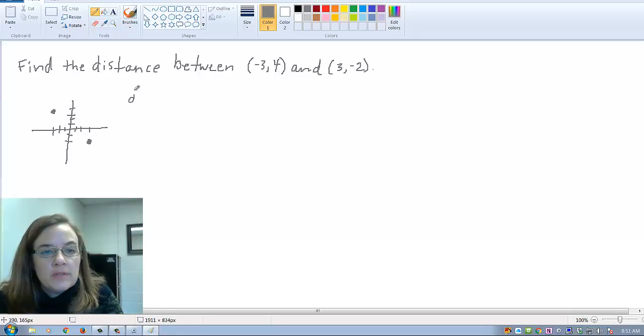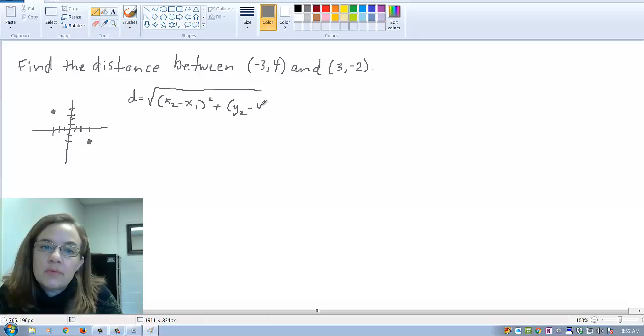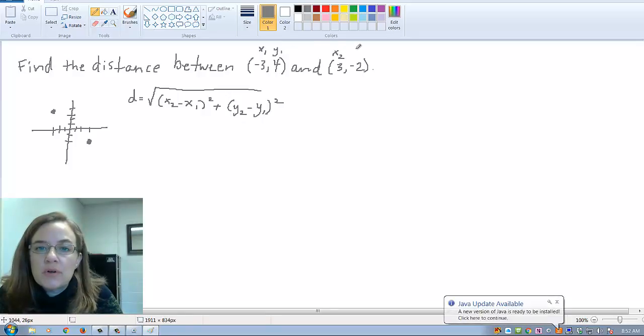So, we use this formula that's actually based on the Pythagorean Theorem, but you don't really need to think too much about it. When I put the points in, I just need to make sure to get the x's from one point and then the y's from the other point. I'm just going to call this my first one, and this is my second one. It doesn't actually matter which one you call which.